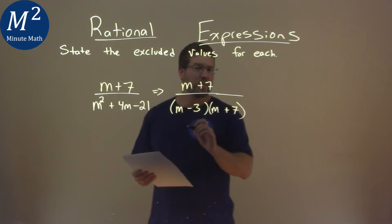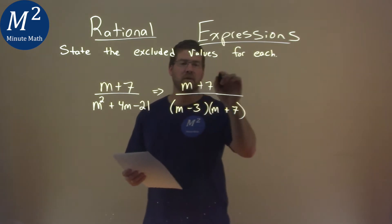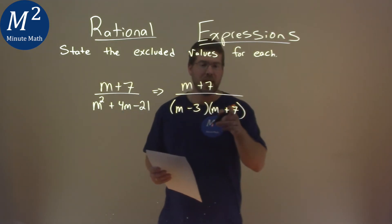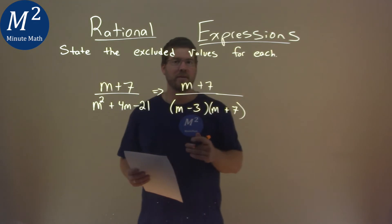Now be careful here, sometimes when we simplify, we can easily cross off the m plus 7. But we have to include that to figure out what values won't work.